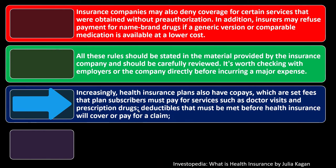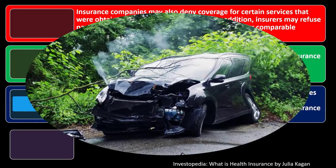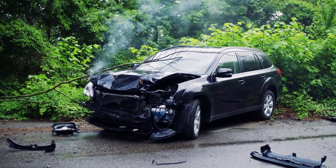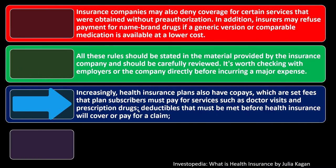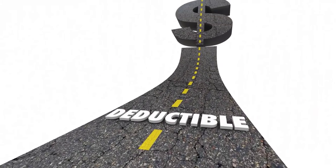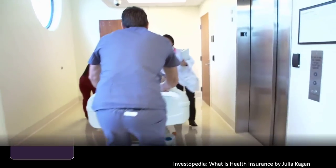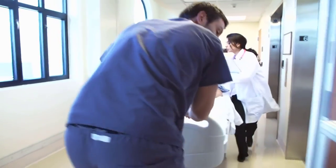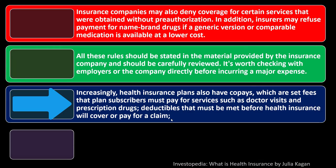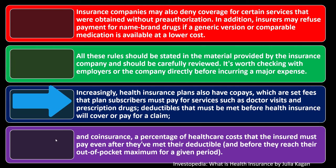With health insurance, we're not just insuring for a catastrophic event — like we do with car accident or property insurance — but we also have preventative type of care built in, which might involve co-pays. We also have a deductible that must be met before health insurance will cover or pay for a claim. The deductible is more of a traditional insurance component where, if some health emergency happened, you would be paying the deductible before the insurance kicks in.